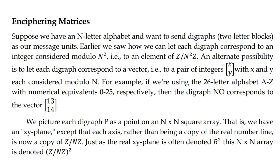We are going to work with an n by n square. We are going to go from 0 to 25, making a 26 by 26 grid. We have an xy plane, except that each axis, rather than being a copy of the real number line, is taken over this discrete range.